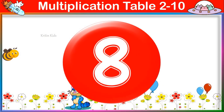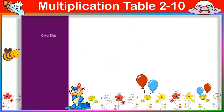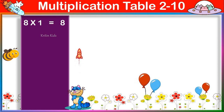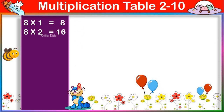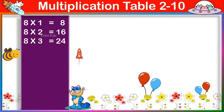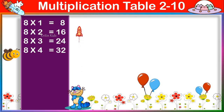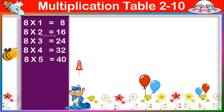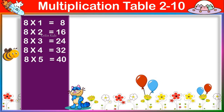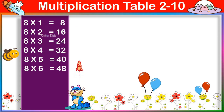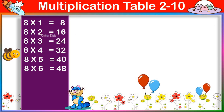Multiplication Table of 8. 8 one's are 8, 8 two's are 16, 8 three's are 24, 8 four's are 32, 8 five's are 40, 8 six's are 48.